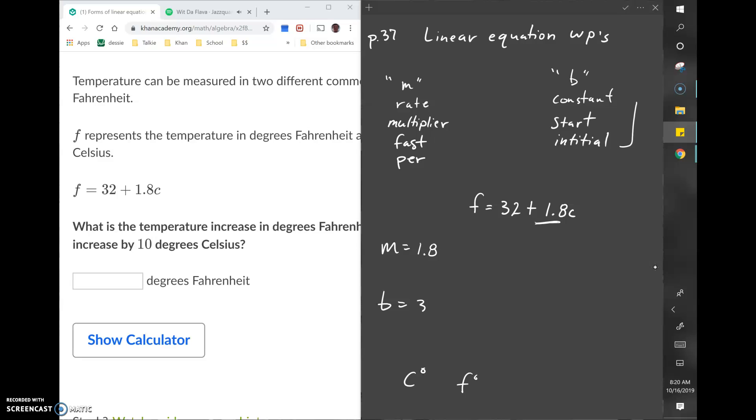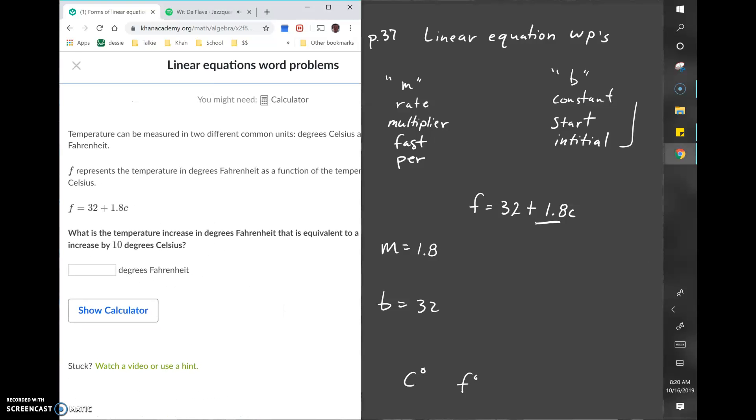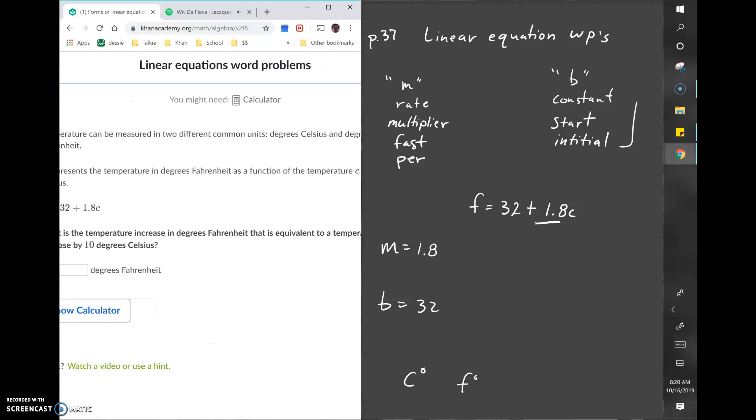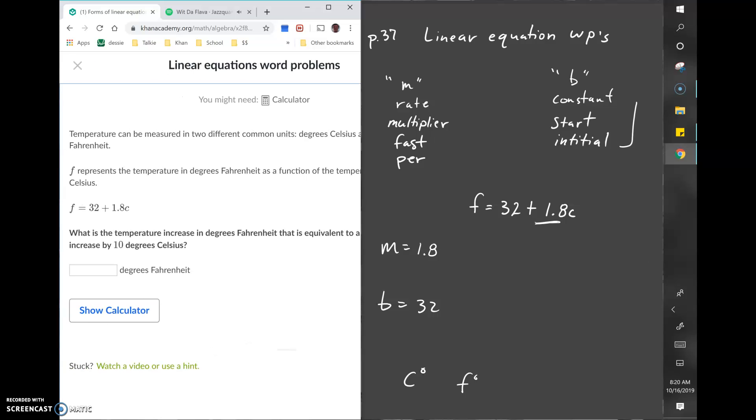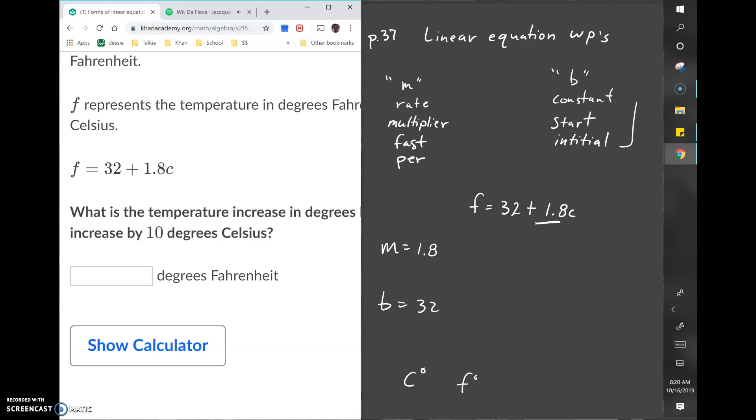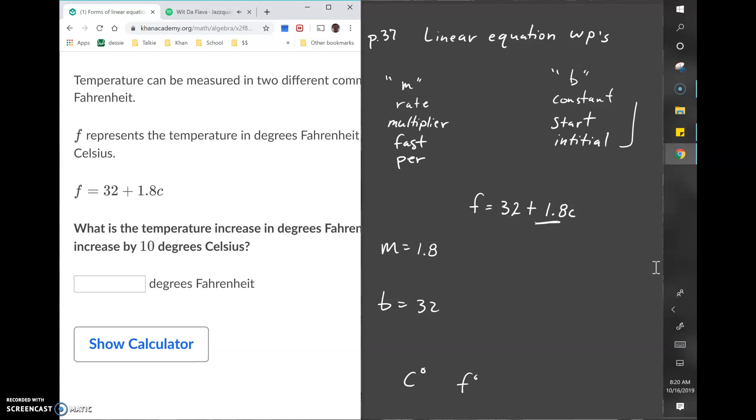The question says what is the temperature increase in degrees Fahrenheit that is equivalent to a temperature increase of 10 degrees Celsius. Essentially this problem is asking how much does F change when C changes by 10. To find that out, we put in 10 for C and multiply.